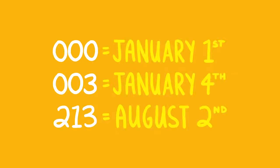So a number of 000 would mean January 1st, 003 would mean January 4th, and so on. All you really need to know is that the higher the number, the fresher the egg.